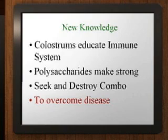Mother's milk contains educated immune cells to help the young immune system recognize invaders. More recently, we discovered that these baby helper cells can also help adult immune systems more quickly identify and target disease. Our early research indicates that combining colostrum with polysaccharides creates a one-two-seek-and-destroy immune response for accelerated disease recovery.